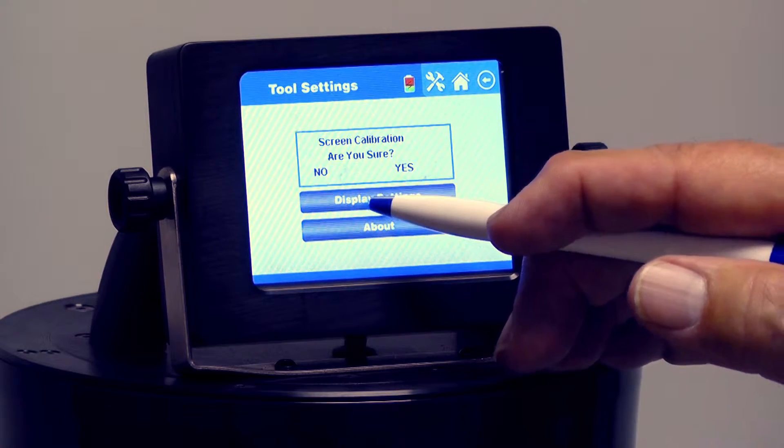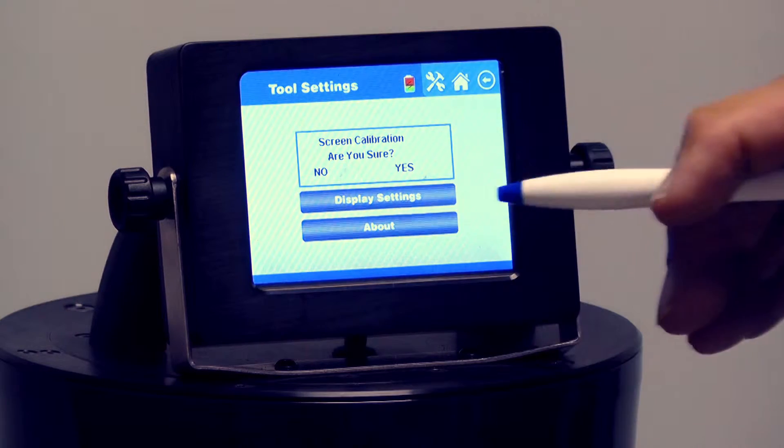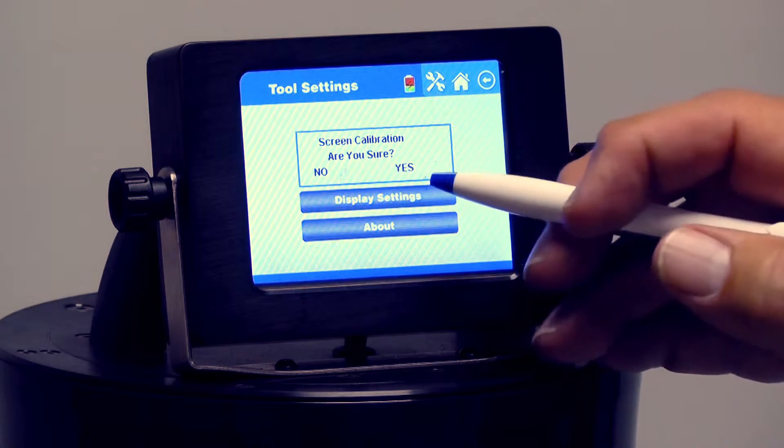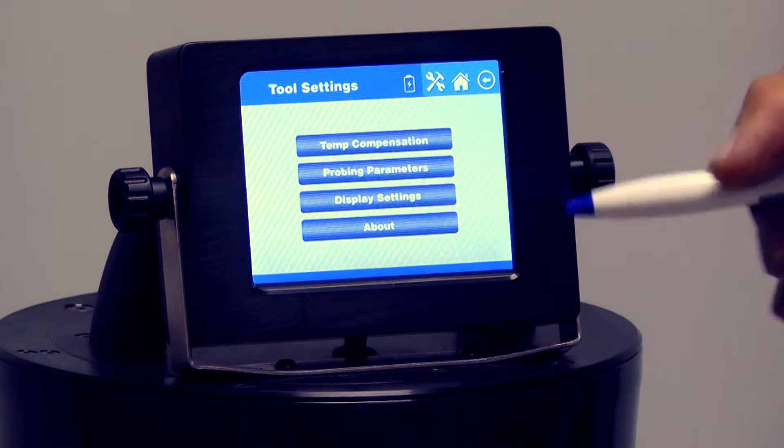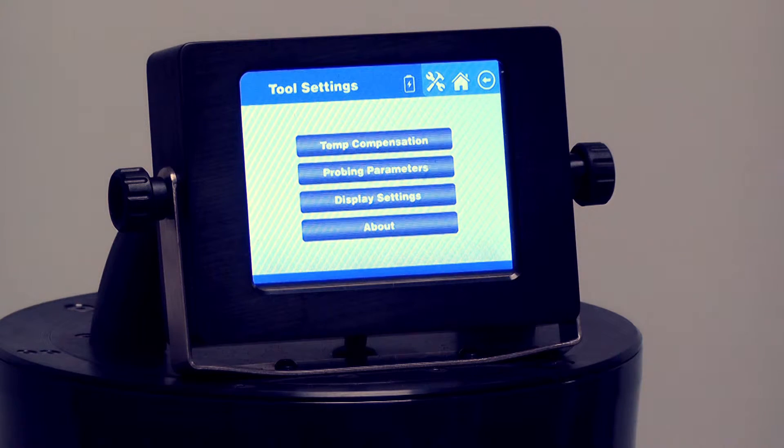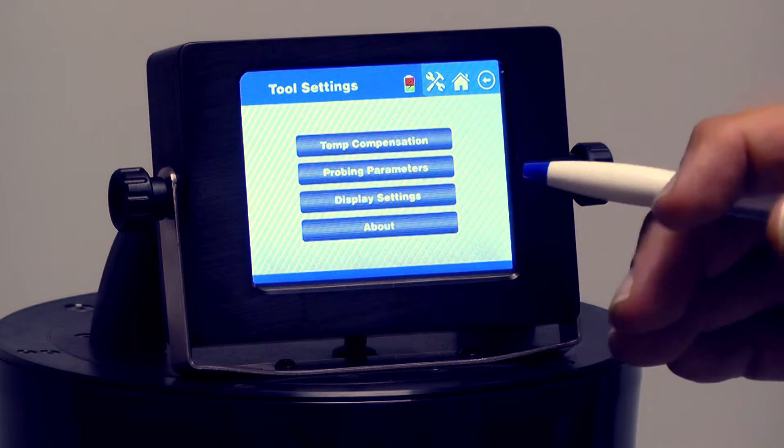Display settings are basically just to calibrate this touchscreen for your touch or your stylus or your finger. Whatever you're going to use, you can calibrate it, yes or no, and I'm going to say no. Basically, it brings up a few little targets around the screen and you touch it, and it calibrates it for your touch. This is a standard touchscreen, which is very similar to what's on many cell phones out there.